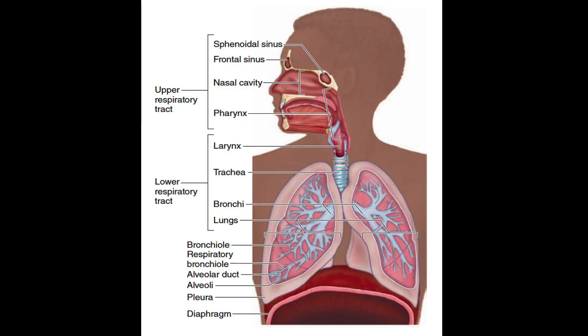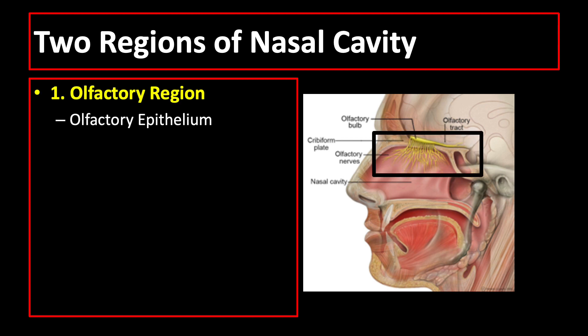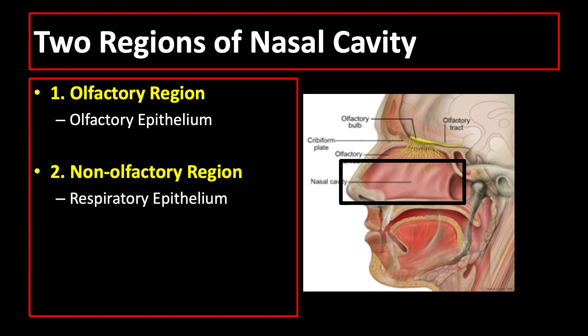Let us now discuss the histology of the different parts of the respiratory system, beginning with the nasal cavities. There are two regions of the nasal cavity: the olfactory region, which contains olfactory epithelium that senses odor, and the non-olfactory region, which is lined by respiratory epithelium and acts as a conduit for air.